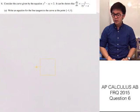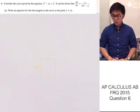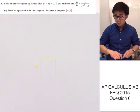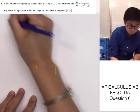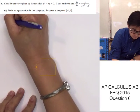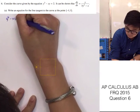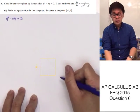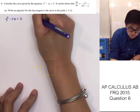Today we're going to be answering an FRQ from the 2015 AP Calculus AB test, question number 6. In this FRQ, we are given the equation of the curve, which is y cubed minus xy equals 2. The derivative of this function is also given.